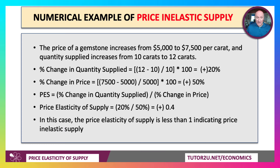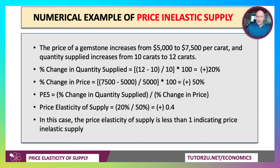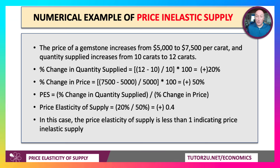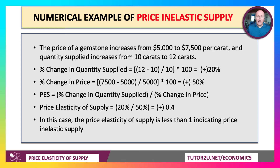Whereas, let's take the price of a gemstone increasing from $5,000 to $7,500 — that is a 50% change in price. That might only lead to a 20% increase in supply. So plus 20 over plus 50 gives plus 0.4, which is less than 1, indicating a price inelastic supply.